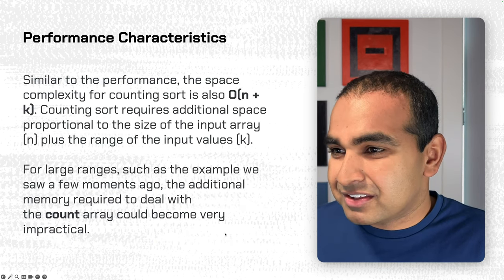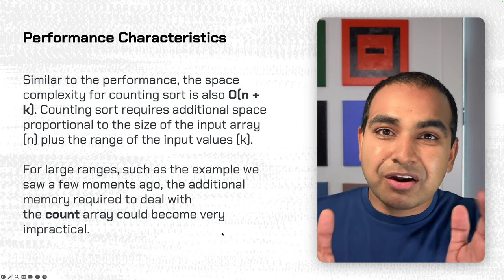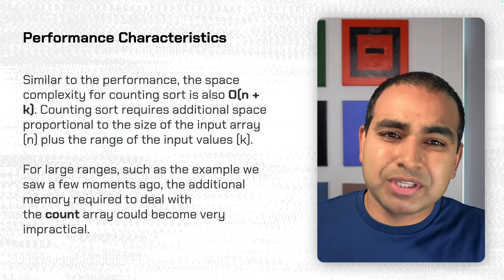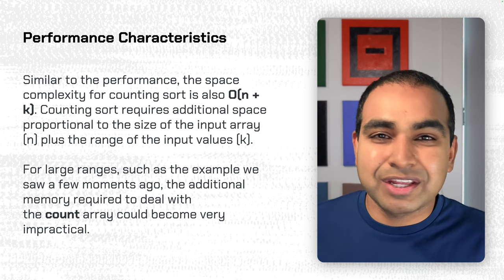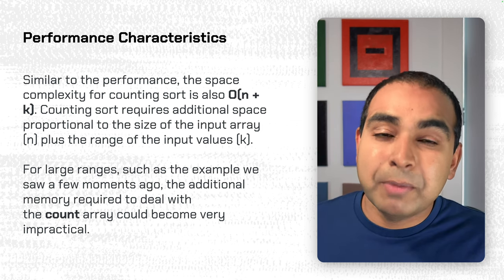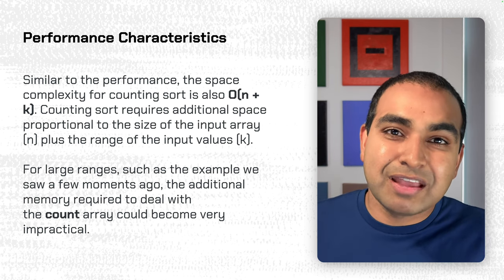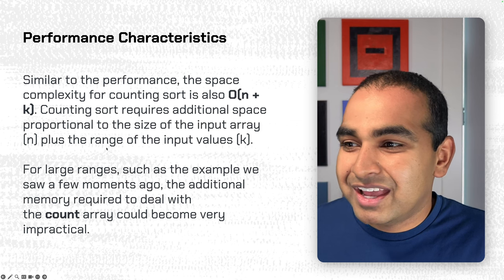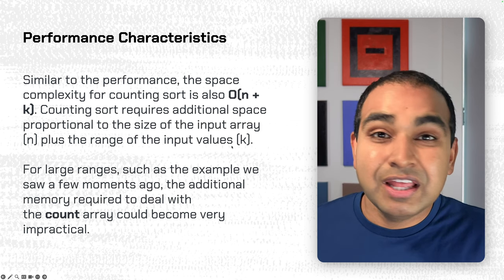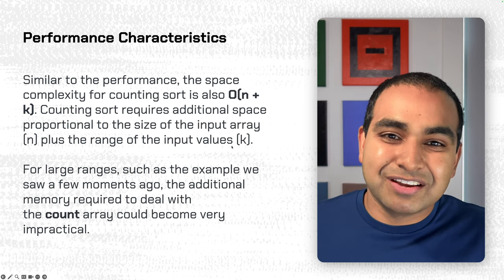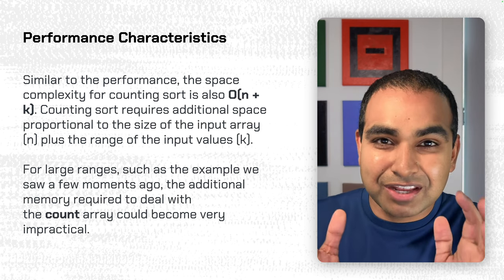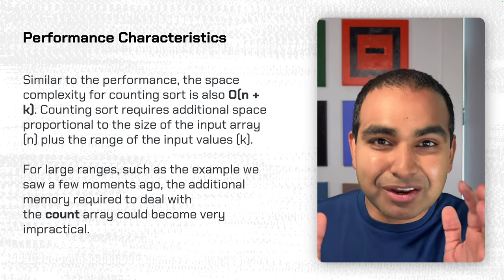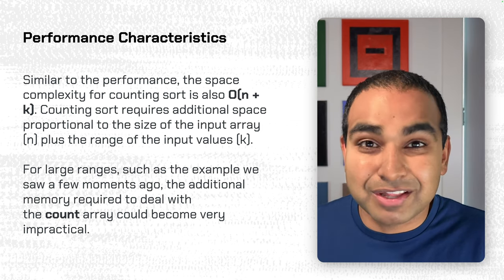Similarly for space complexity, it's based on the intermediate arrays we create: the input array, the count array, and the output array. Input and output are the same length. The count array is the most variable — its size depends on the range of values. Keeping the range minimal, where n and k are similar, ensures space complexity also stays within the linear bucket that makes counting sort such an ideal sorting algorithm.